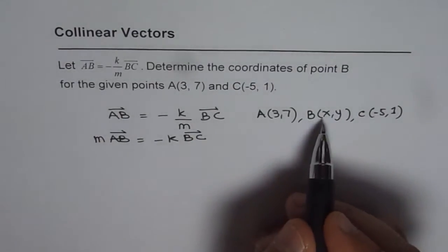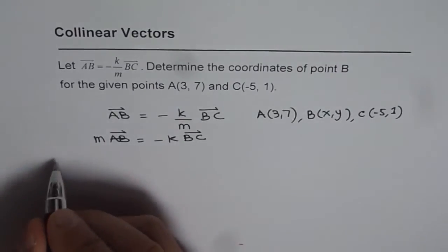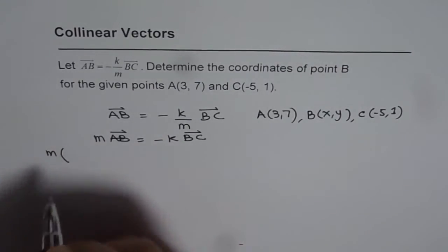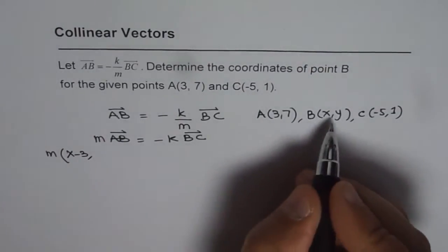M times AB. So AB is what? A to B will be (X minus 3, Y minus 7). So we can say M times (X minus 3, Y minus 7).